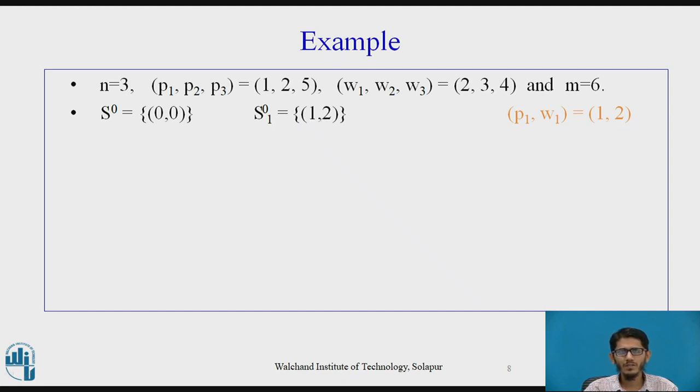Now, the next step is to find s1. Now, for s1, we are going to merge the tuples in s0 and s01. So, therefore, s1 would consist of the tuples (0, 0) and (1, 2).